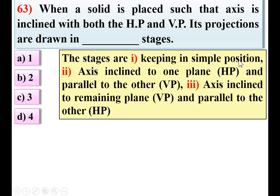In the first stage, the solid object is in simple position — generally the axis is perpendicular to HP or perpendicular to VP. In the second stage, the axis is inclined to one plane, say HP, and parallel to the other plane, VP. In the third stage, the axis is inclined to the remaining plane — in this case, inclined to VP. So if it is inclined to both HP and VP, three stages are required. So C is the right answer.